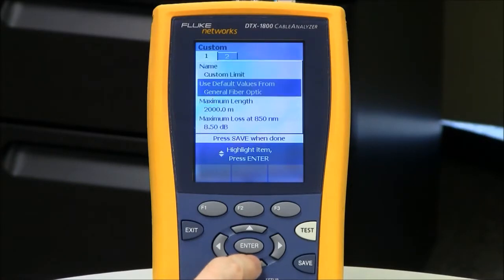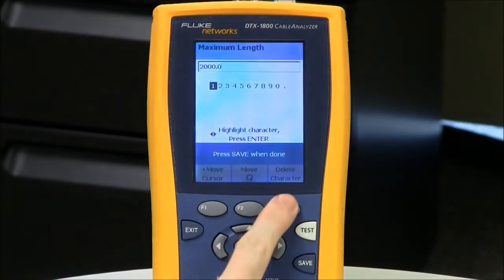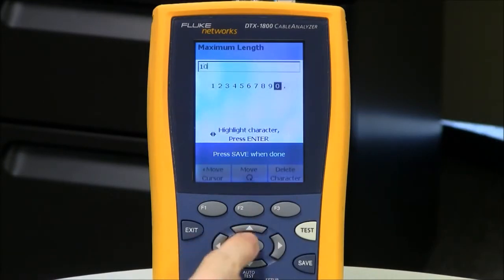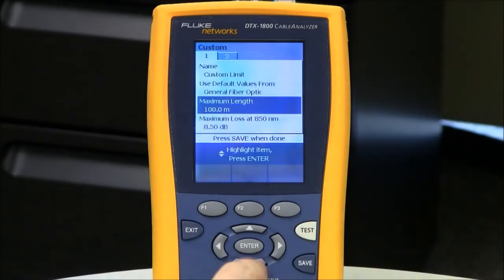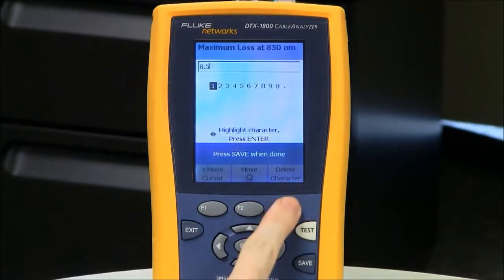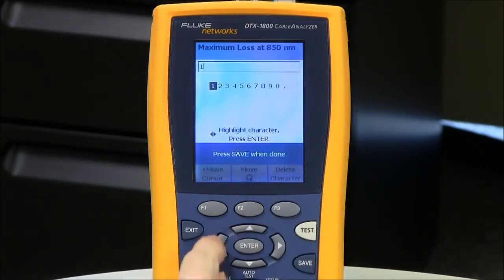Now I need to change my maximum length. And I'll change that to what the consultant told me, which is 100. Now my maximum loss I'm allowed at 850 was 1.04 dB. So Enter, 1.04 dB.